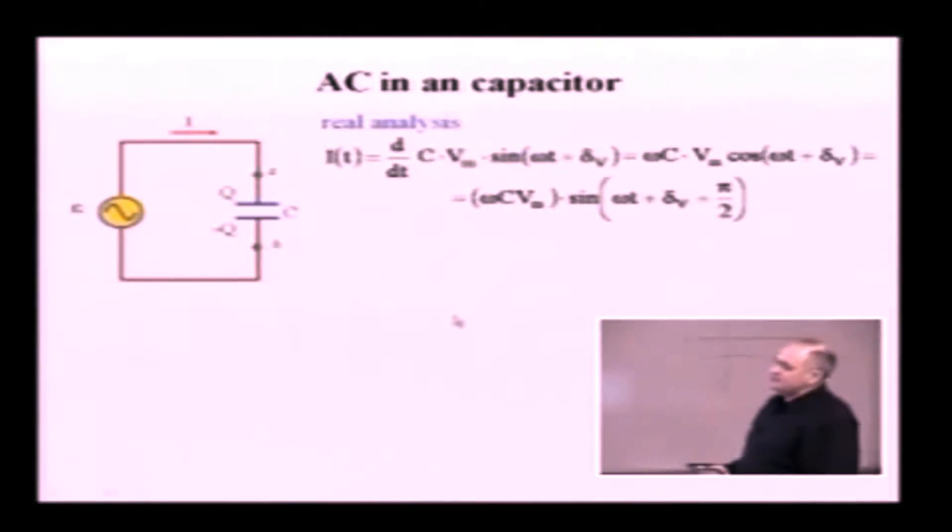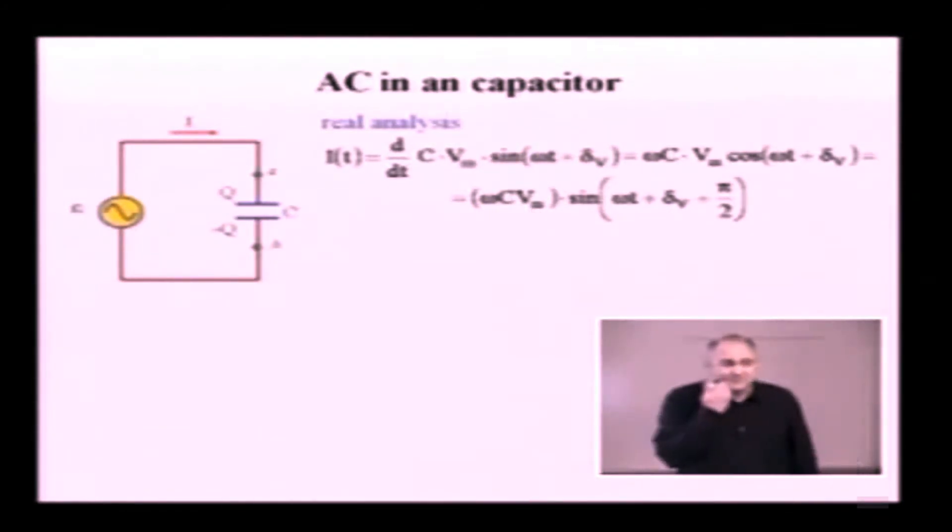So, what's the peak value of the current then? Omega C times Vm. Alright. So, angular frequency times capacitance times peak value of the voltage. So, how about impedance?